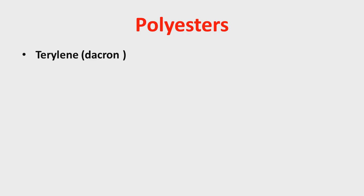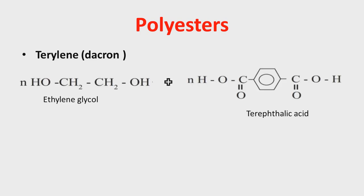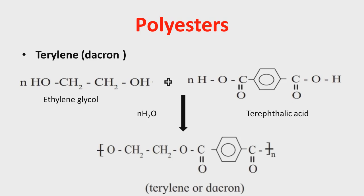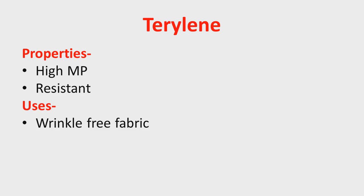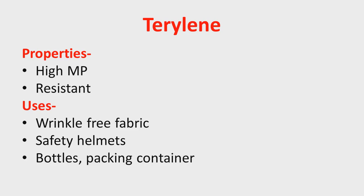The next category of condensation polymer is polyester. The most commercially important polyester fiber is Terylene, also called Dacron. It is made by combination of ethylene glycol and terephthalic acid. The alcohol gives hydrogen and the carboxylic group gives OH, so removal of a water molecule takes place, forming Terylene. Terylene has a relatively high melting point and is a good resistant to chemicals and water. It is used in manufacturing wrinkle-free fabric by blending with wool and cotton to give Terri-cot and Terrywool. It is also used in safety helmets, and due to its thermoplastic character, in manufacturing bottles and packing containers.